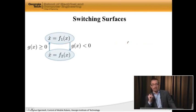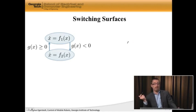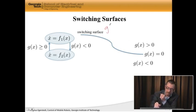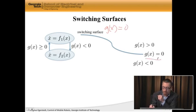Let's be a little bit general here. Let's say I have one system, x-dot equals f1 of x, and then I have a switching surface g of x. When g is negative, I switch to f2, and when it becomes positive, I switch back to f1. Here's my switching surface: g of x equal to zero. That's where the action is.